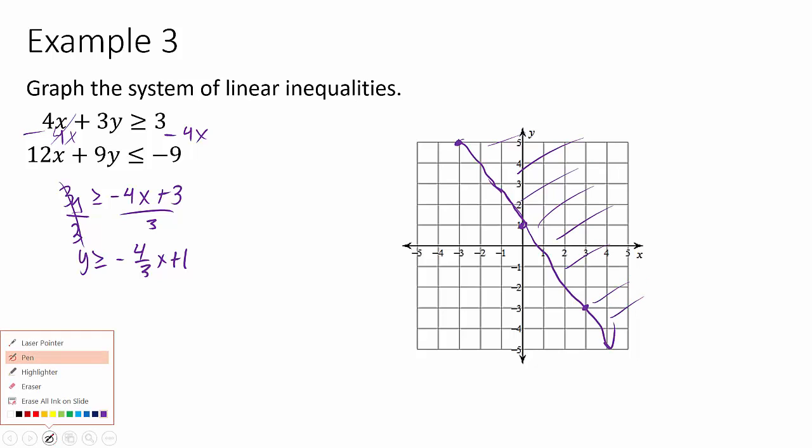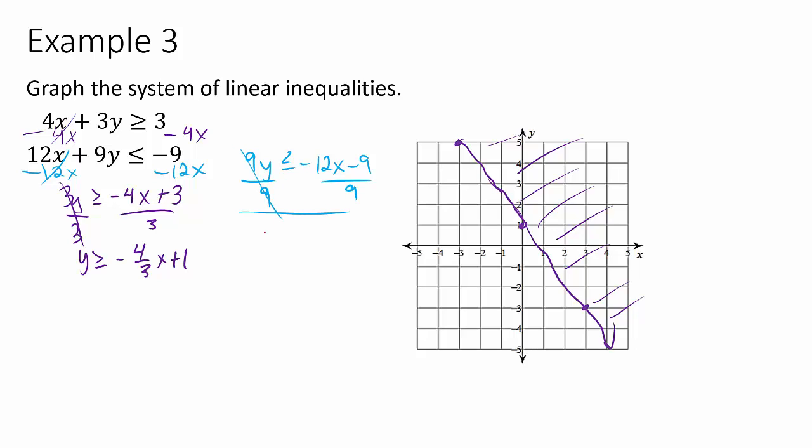9y is less than or equal to negative 12x minus 9. We're going to divide everything by 9. y is less than or equal to negative 4 thirds x minus 1. So, this starts at negative 1 and also goes down 4 right 3. So, these are parallel. Something different happens this time with our parallel lines. That's a really bad line. Pretend that line is straight, please. We are less than this line. That's this way.